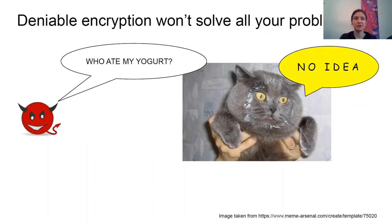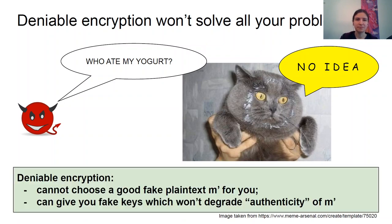It's important to realize that deniable encryption won't solve all your problems. If your fake plaintext is not very believable to begin with, then creating fake keys will not make it any better. Deniable encryption doesn't tell you how to pick your fake plaintext. This is a problem even in the ideal world. Rather, as long as you have some fake plaintext — be it believable or not — deniable encryption tells you that the fake keys will not degrade the level of how believable it is.